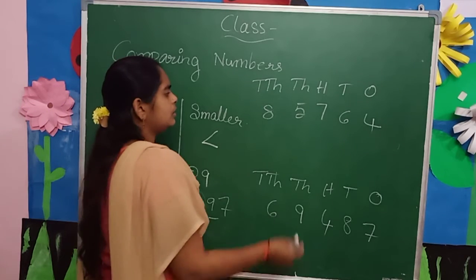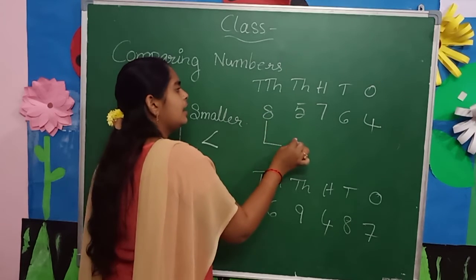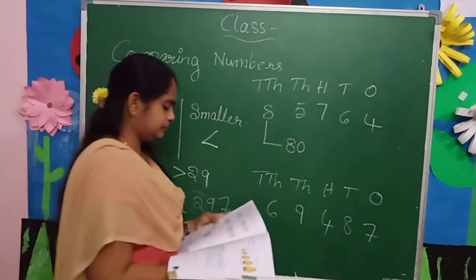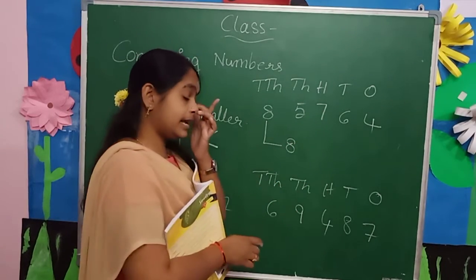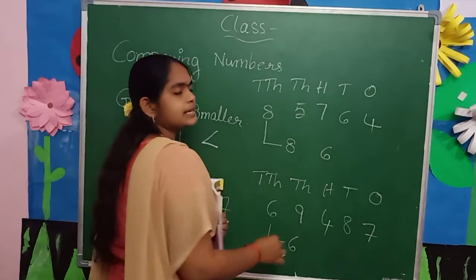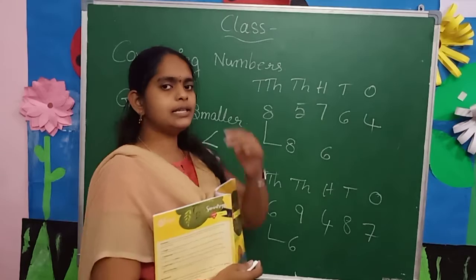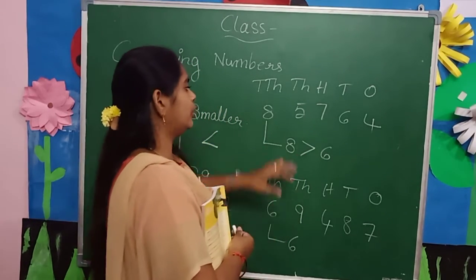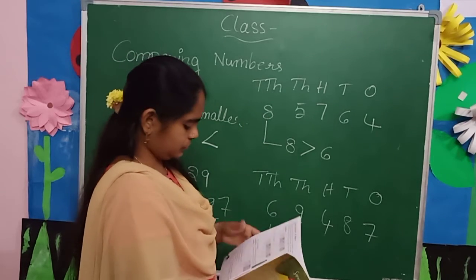So let's move to the place values. Here, eighty thousand and here sixty thousand — that means eight and six. Eight is greater than six, so this number is greater than that number.